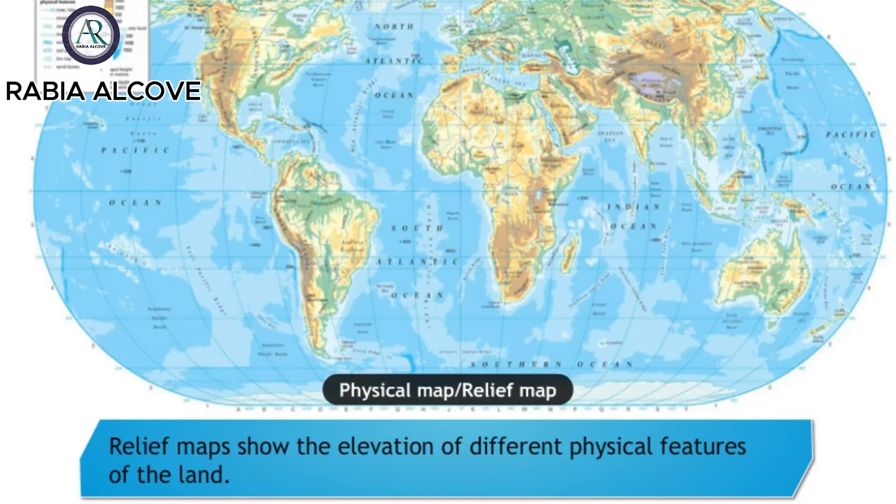Relief maps show the elevation of different physical features of the land. A relief map shows the mountains, hills and valleys of an area in different shades of color that indicate their different elevations.